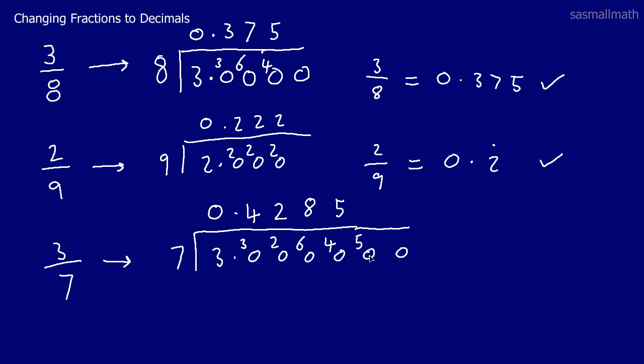7s into 50. Well 7 7s are 49. Put a 7 there. 49 from 50 leaves us 1. So bring the 1 over. 7s into 10. Well that goes once. 1 7 from 10. It leaves us 3. I'm going to need some more 0s there.